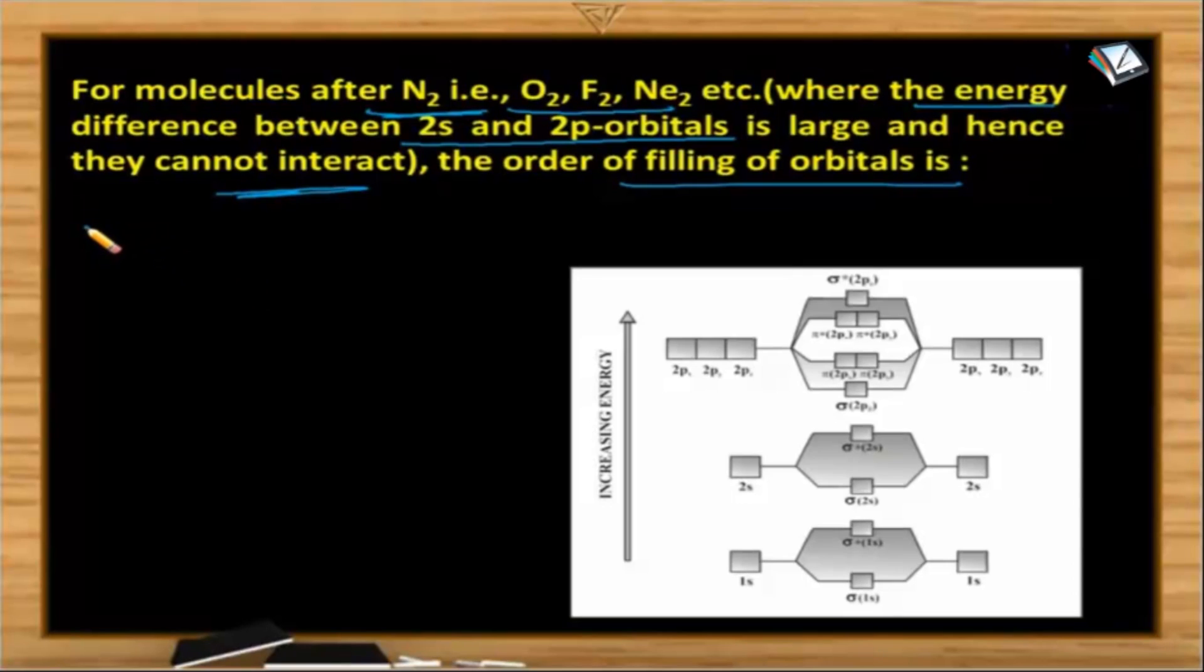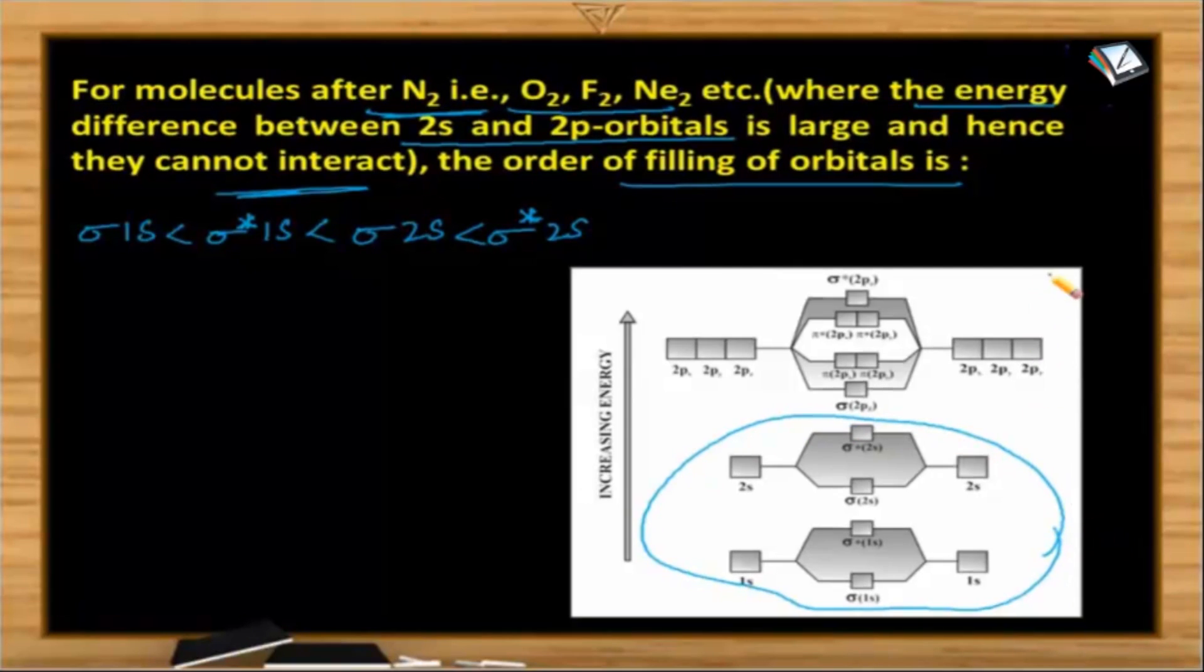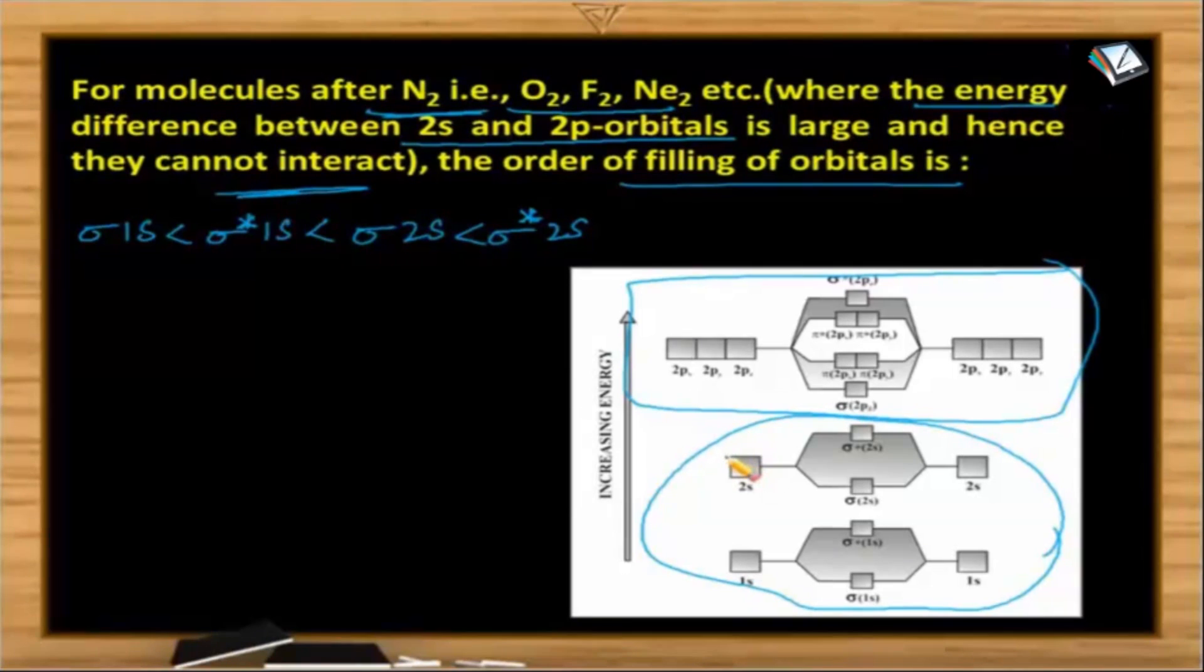Of course the first one is the same, sigma 1s less than sigma star 1s. What will be the next one? That is sigma 2s then comes sigma star 2s. So up to here it is same in both the cases and the difference comes at this particular point. In the previous type there is up to nitrogen what is next after sigma star 2s? It is pi 2px, means this is the only point of difference in between both of them. So this is the one very very important way you need to understand.